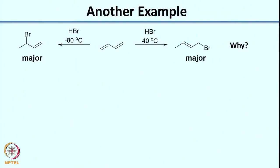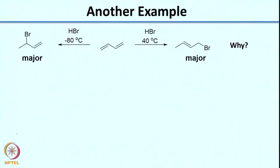Here is another example of kinetic and thermodynamic control. The molecule is 1,3-butadiene, and if you do addition of HBr to 1,3-butadiene at low temperature, you get one bromo-substituted product as the major product, whereas in the other case you see bromine at position 1. This appears to be what is called 1,2 versus 1,4 addition, where 1,2 addition seems to be favored at low temperature. I'd like you to pause your video and think about why this could be the case. As a hint, write the mechanism - the very first step would be addition of H+.